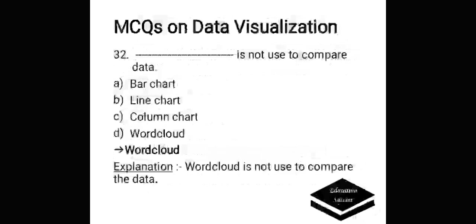Which of the following is not used to compare data? Options are: A. Bar chart, B. Line chart, C. Column chart, D. Word cloud. Correct answer is word cloud. Word cloud is not used to compare the data.